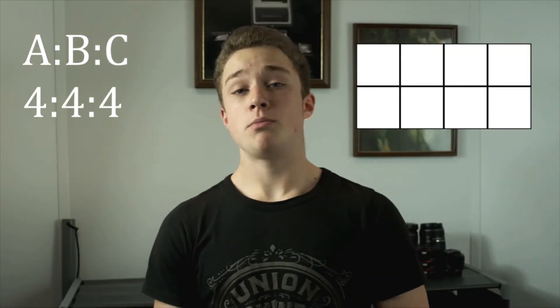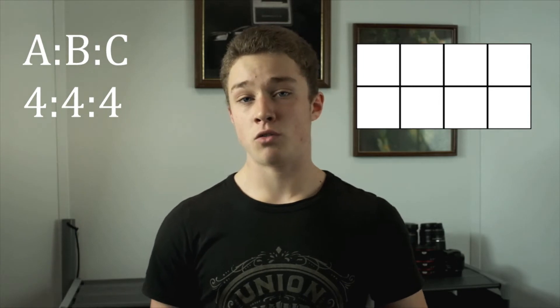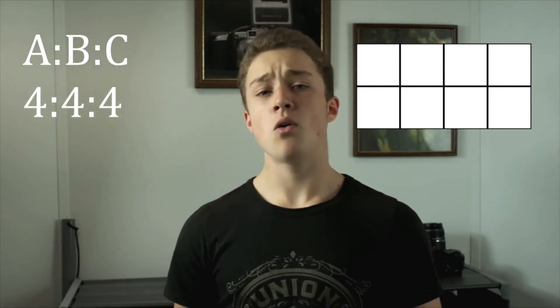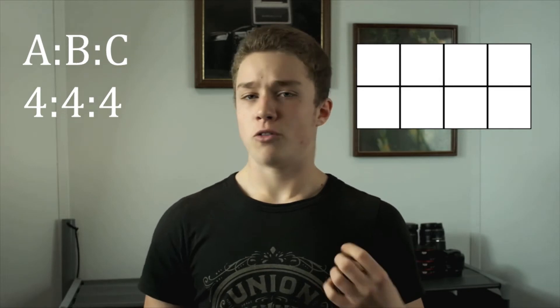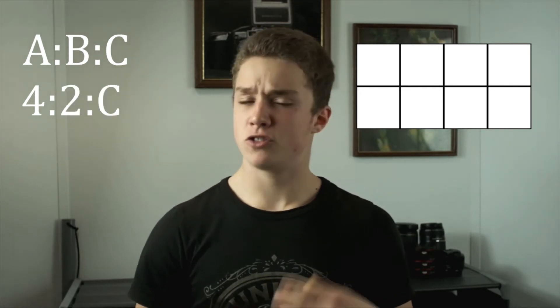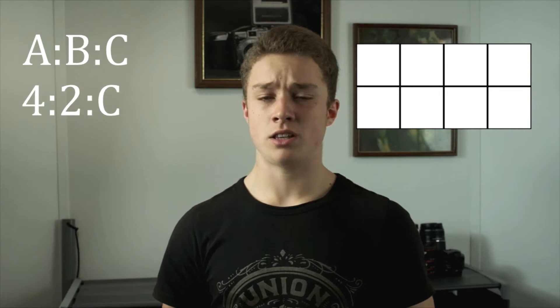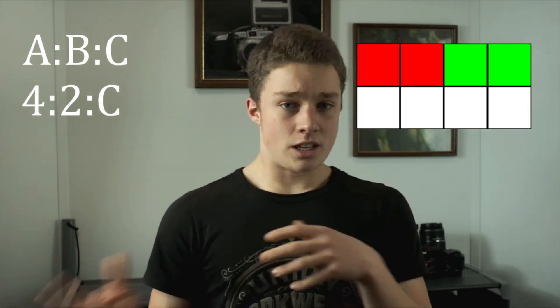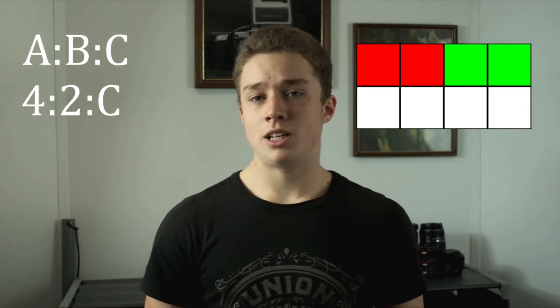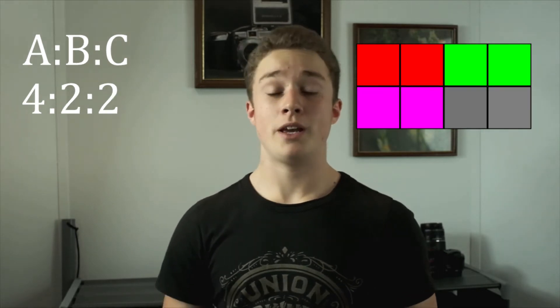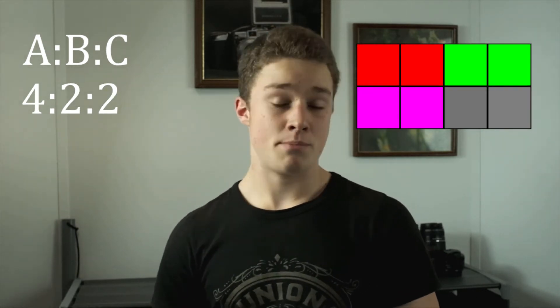So now we'll move on to 4-2-2, which means you still have that same reference area of 4 pixels wide and 2 pixels high. But now, instead of having 4 in the B position, you have 2. And this means that only 2 of the pixels on the top row can be different. Then you move on to the C position, and that is also 2, which means only 2 of the pixels on the bottom row can be different.